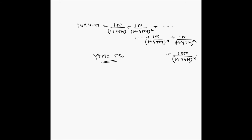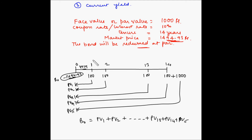Now there is a very interesting fact here. We have the yield to maturity, and in the videos for bonds with maturity we have kept this as Kd, which is the required rate of return. The interesting fact is that the yield to maturity is generally the same as the value of Kd, which is basically the market rate, because the value of 1494.93 gets decided by the market rate.